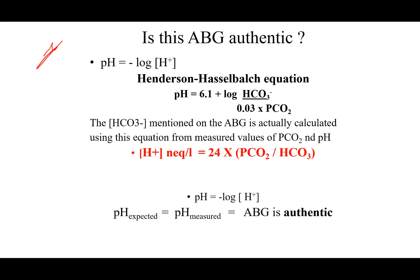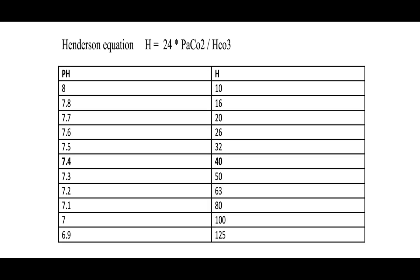Step zero: make sure the ABG is correct using the equation: hydrogen ions equals 24 multiplied by CO2 over bicarb. This is the correlation table with hydrogen ion concentration versus pH.